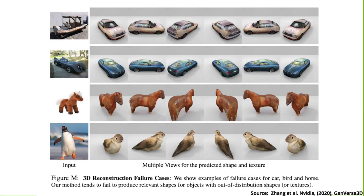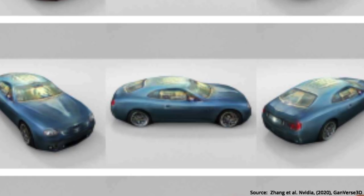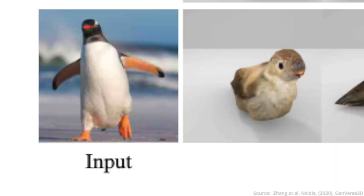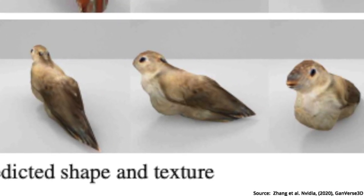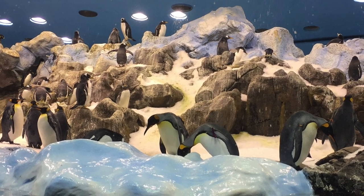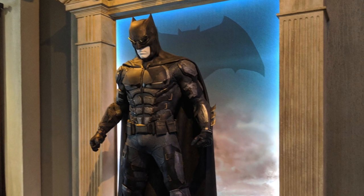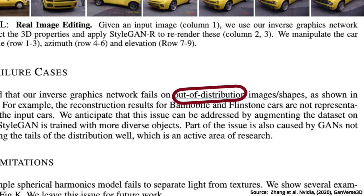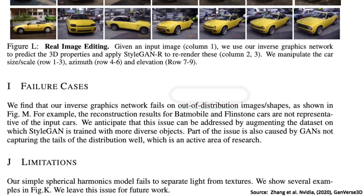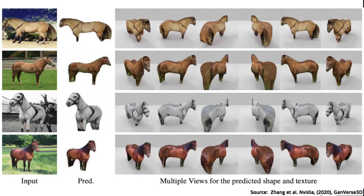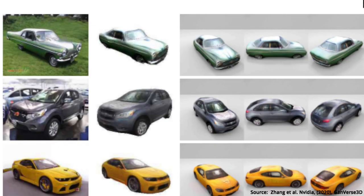Another issue is that GANverse 3D doesn't seem to generalize very well. If you give it a picture of a Batmobile, it gives you back a 3D model of a completely different car. If you give it a picture of a penguin, it gives you back the wrong bird — definitely not a penguin. This is because the datasets used to train the StyleGANs don't contain penguins or Batmobiles — these objects are out of distribution. You will also notice some oddities in the generated images, such as the horse missing its tail, mainly because training images were front-facing pictures. Additionally, GANverse 3D is not able to separate the lighting from the texture.